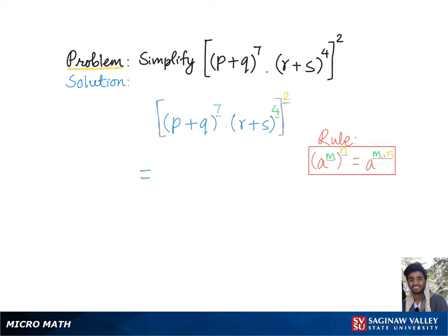So to simplify this, we will keep the base (p + q) and multiply the exponents, which is seven times two.